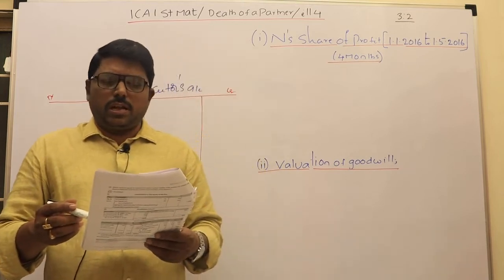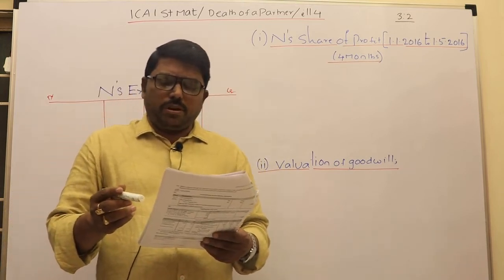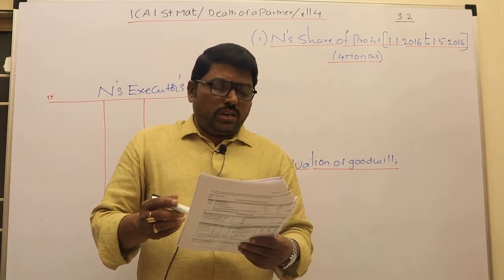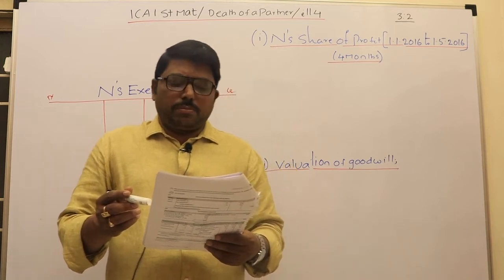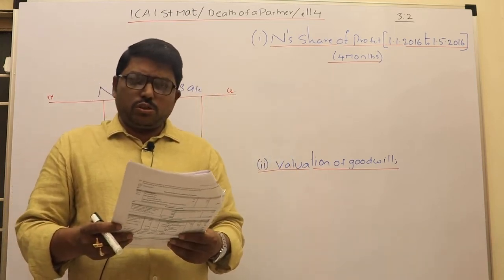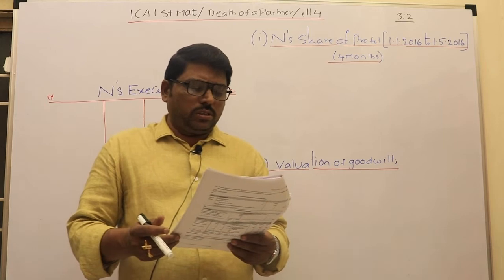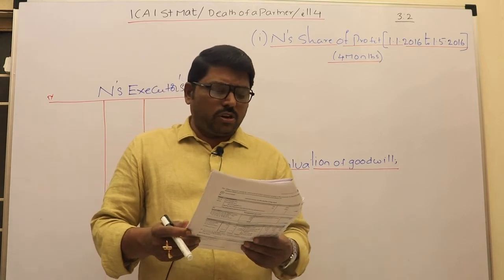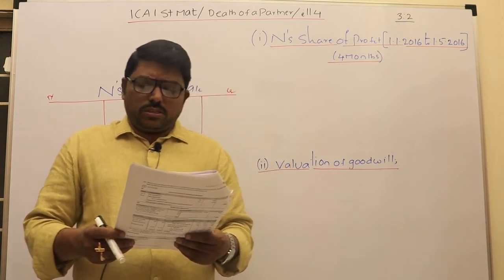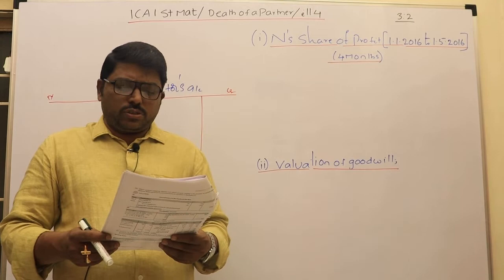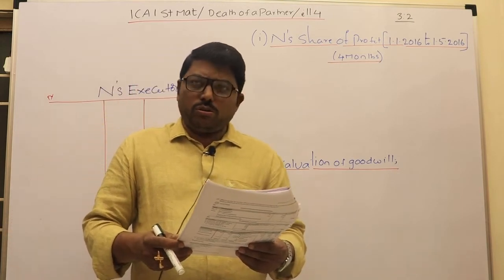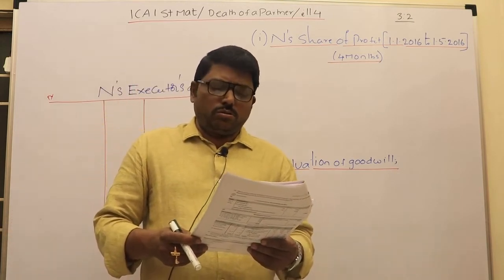The balance sheet is given in trial balance form: B's capital is 90,000 and N's capital is 60,000. Reserve is 30,000, bills receivable 50,000, investments 40,000, cash 1,10,000, and trade payable 20,000. The total comes to 2 lakhs on both sides.